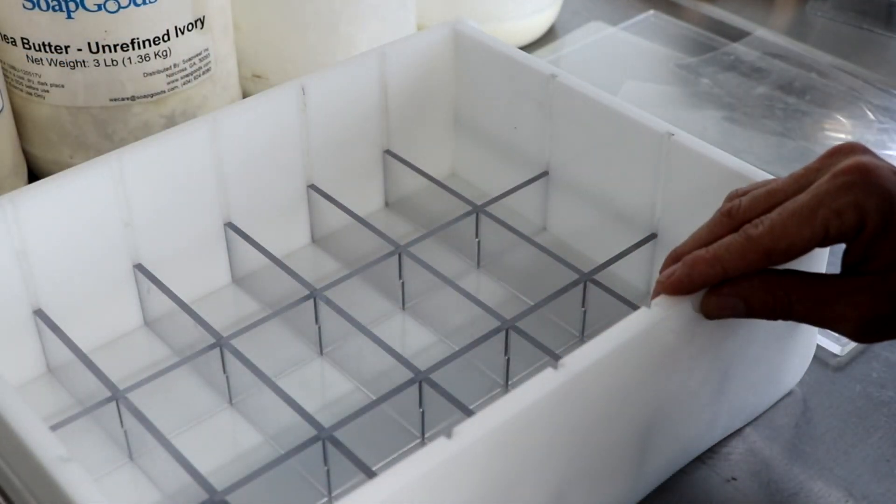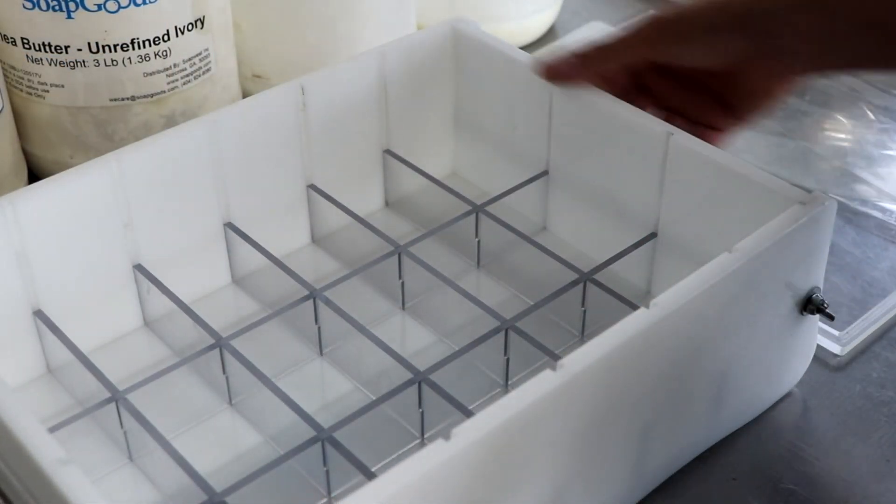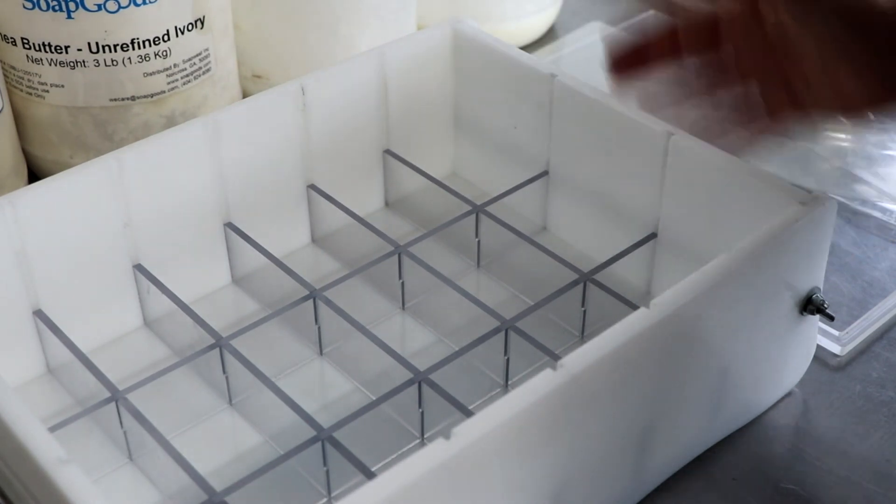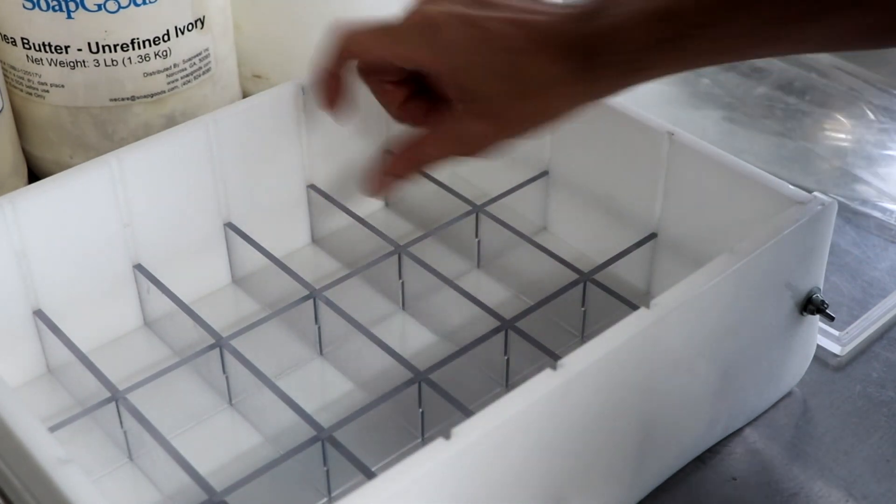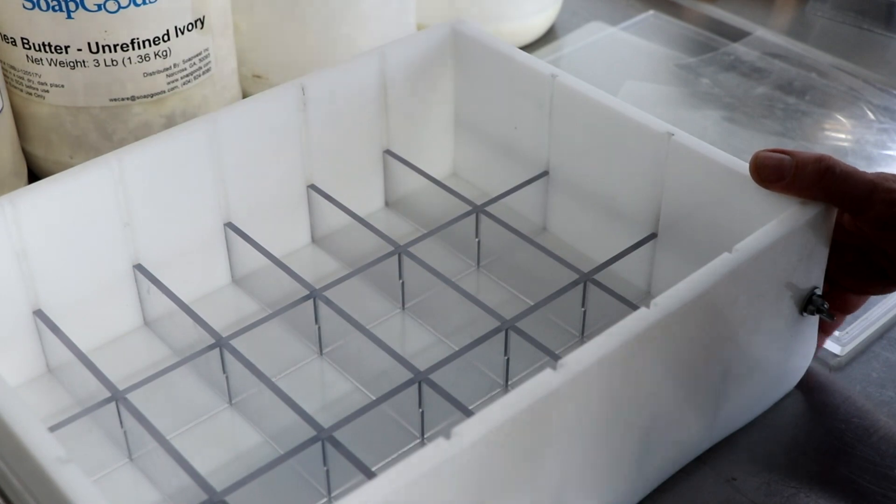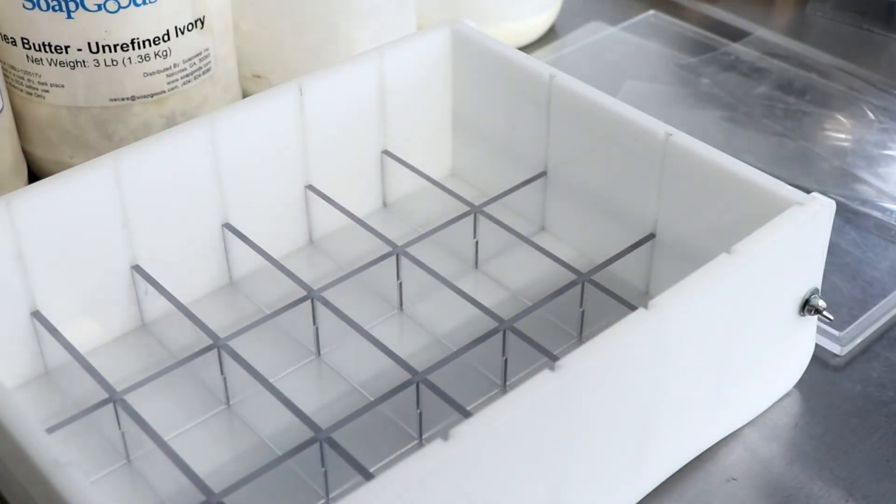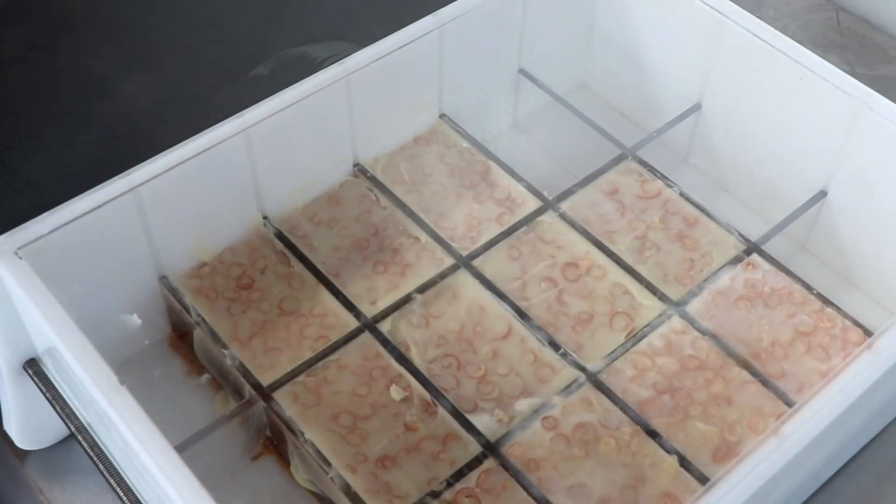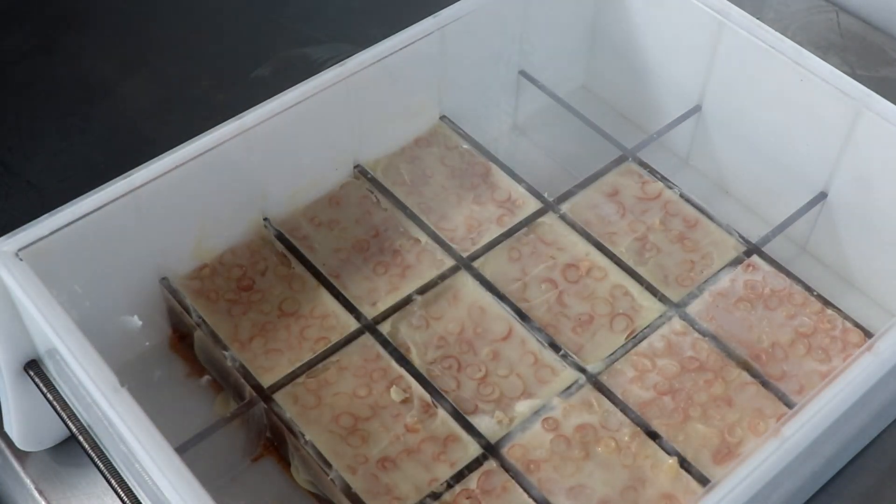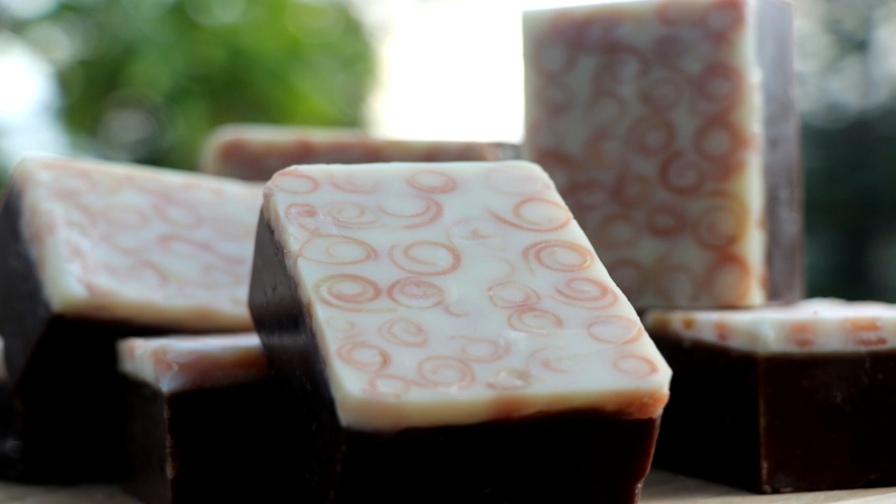Now, let me show you this particular mold. Originally, this mold was only supposed to be as tall as those dividers. This was an 18 bar mold. But what I wanted to do was I wanted to have something that I could pour a lot of batter in at the same time without having an additional mold. And so the original design for this particular mold was this beautiful, fat, gorgeous, hefty bars of soap.